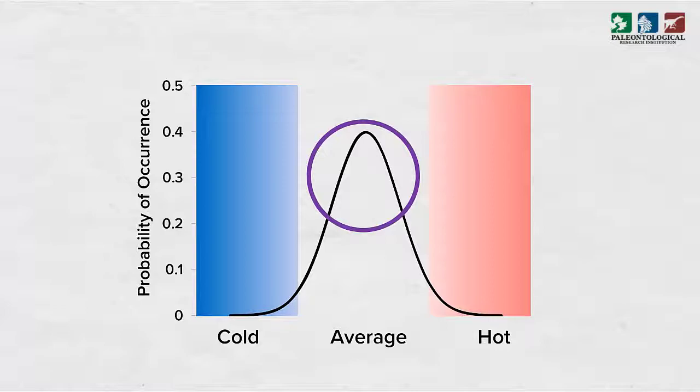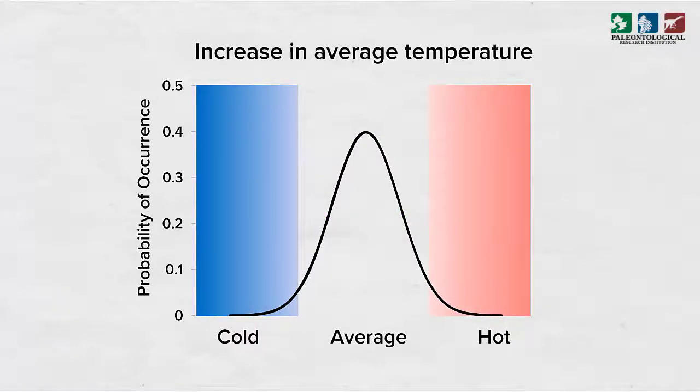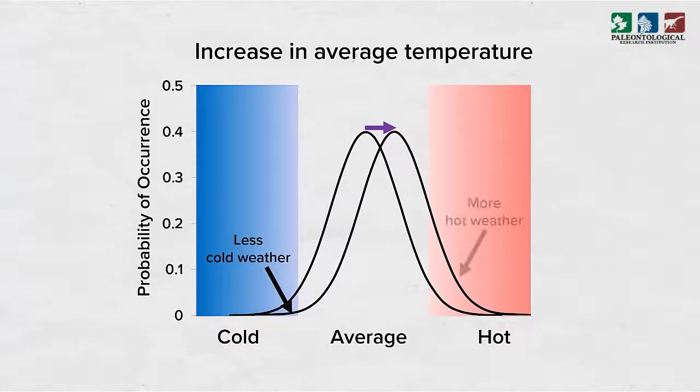But we do sometimes get very hot or very cold weather. If the average temperature of a region increases, the bell curve shifts towards hotter temperatures. In this new climate, we experience less cold weather and more hot weather, including more record hot weather.